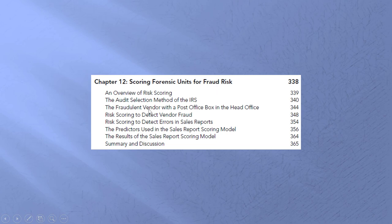Scoring forensic units for fraud risk: we have predictors, those predictors have weights, and we end up with a final fraud risk score. This is similar to a professor's grading system — predictors like quizzes, tests, cases, and presentations have weights, and we end up with a final score for each student. Employers use those course grades to predict where students would be highly productive members of their staff.